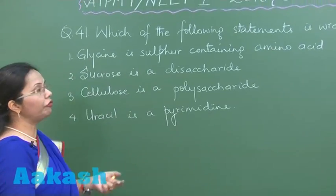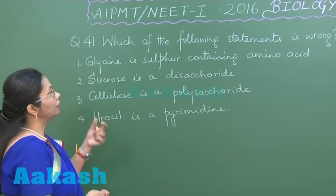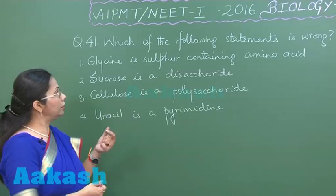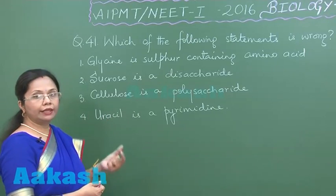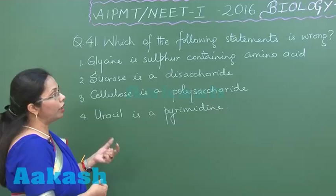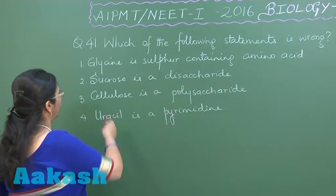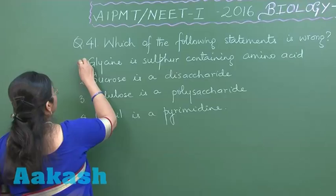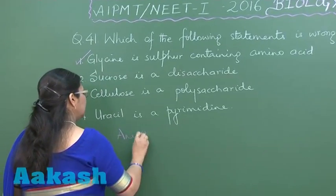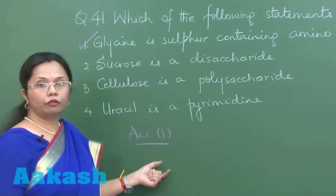Glycine is a sulfur-containing amino acid — this is wrong, because the sulfur-containing amino acids are methionine and cysteine. Glycine is actually the simplest amino acid, where the R group is just a single hydrogen. So the answer is option one. Now let's move on to question 42.